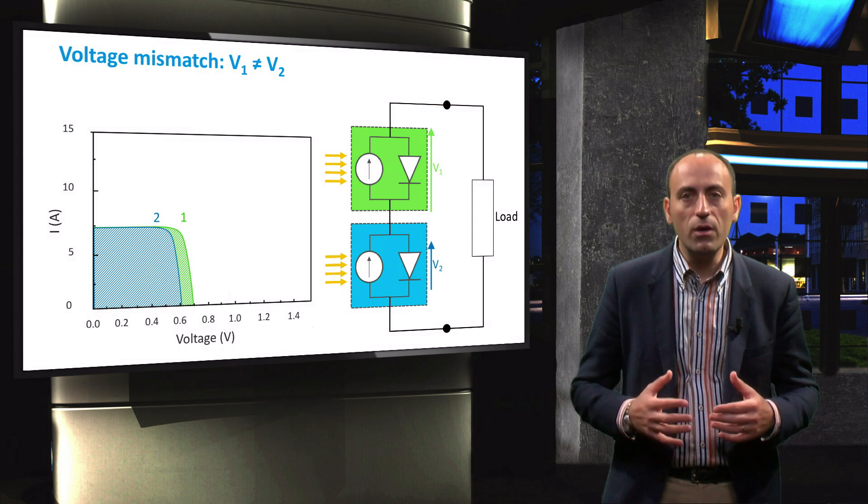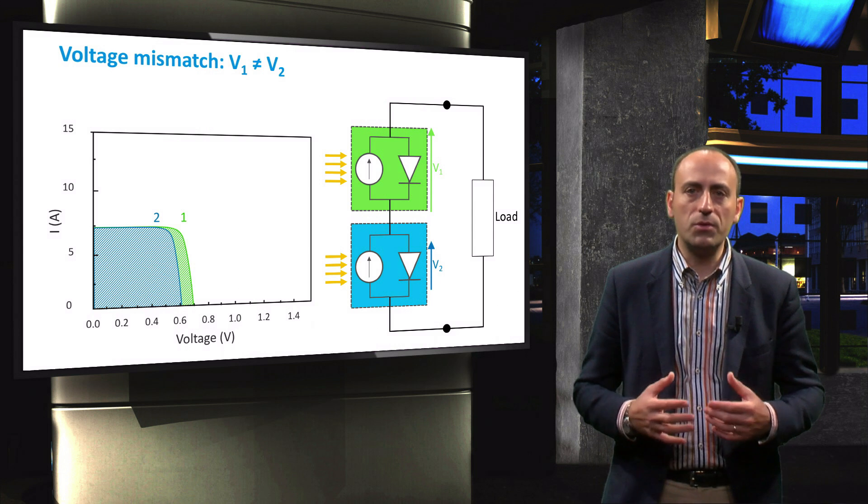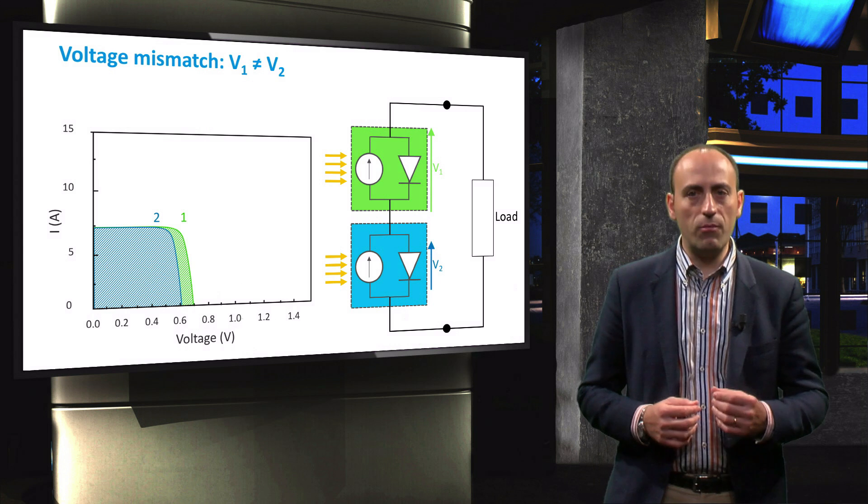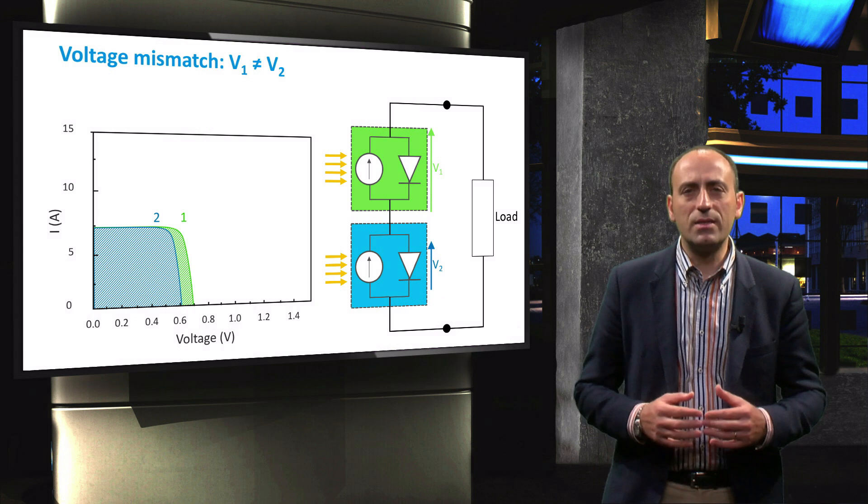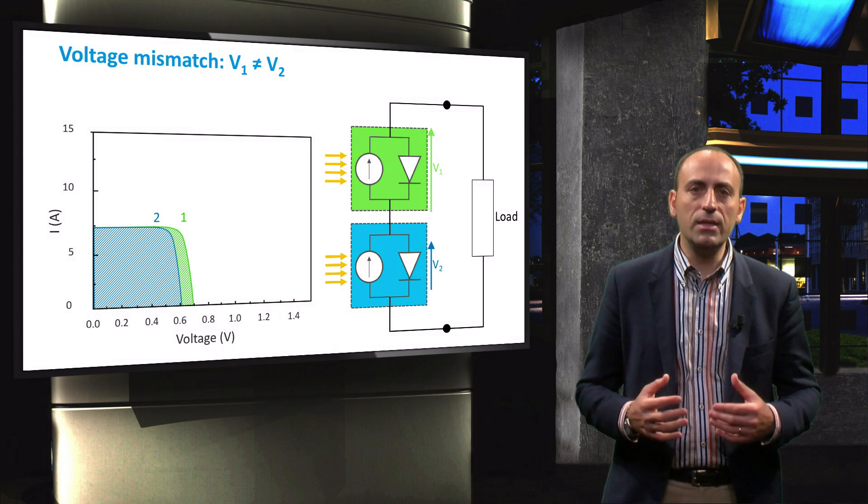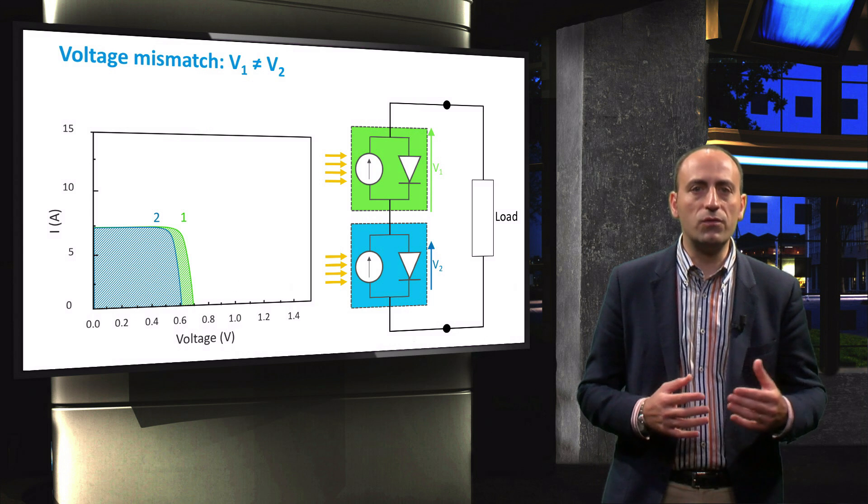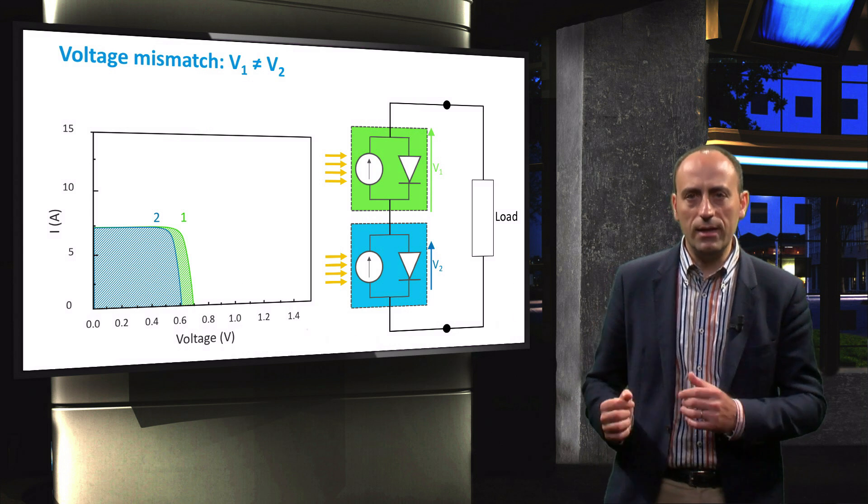In reality, however, it might happen that the cells have a voltage mismatch, perhaps due to slight variation in the fabrication process. Here, this difference in open circuit voltage is exaggerated to be graphically visible. But realistically, the difference can be in the range of 10 to 20 millivolts, so around 10 times smaller than depicted here.